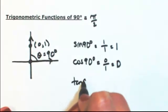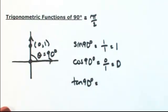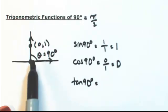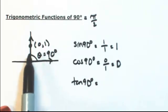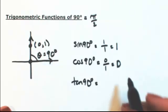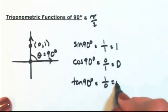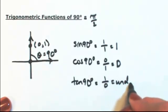The tangent of 90 degrees is opposite over adjacent. The opposite is going to be 1, and the adjacent is 0. So this is undefined.